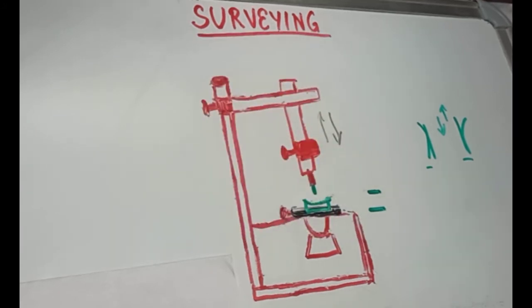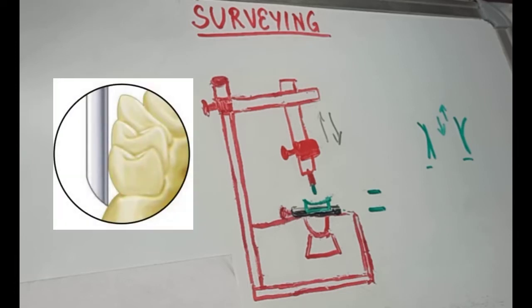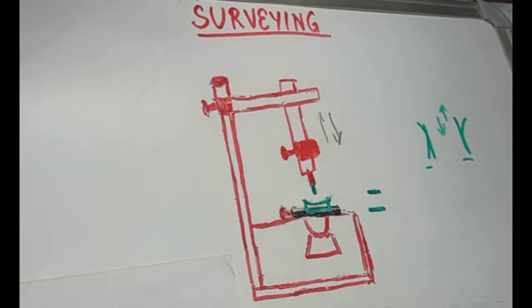Now, after examining the proximal surfaces of the abutment teeth, we will examine the facial and lingual surfaces of the abutment for potential areas of retention. Here, we provide the retentive components of the cast partial denture.